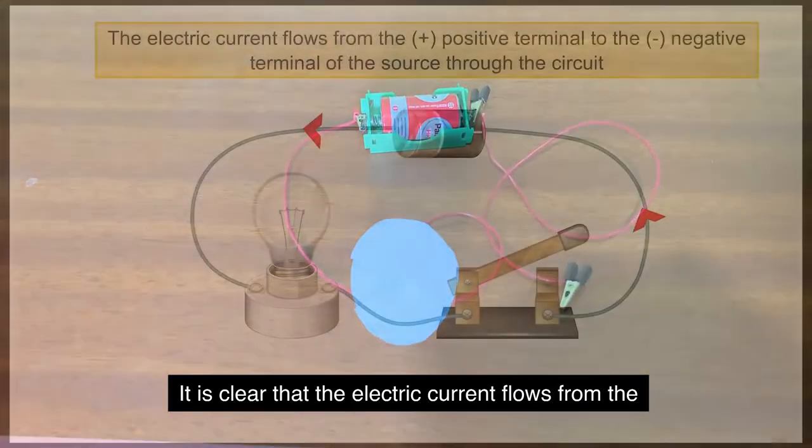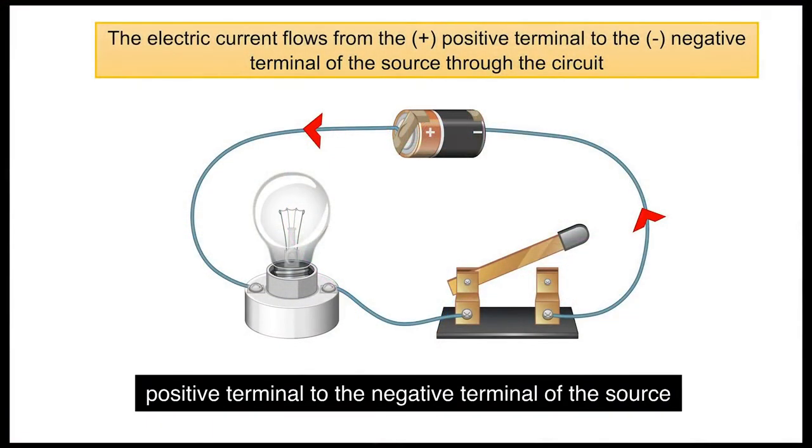It is clear that the electric current flows from the positive terminal to the negative terminal of the source through the circuit.